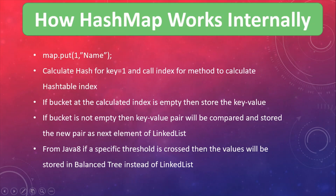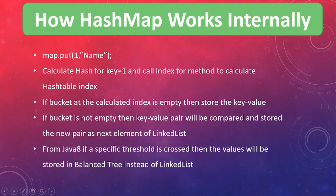If the bucket is not empty, the key-value pair will be compared to the already stored key-value pair. If it is different, then the new element we are trying to put in the map will be stored as the next element in the linked list. Whenever values are stored and the index number is the same for the hash table, all new elements keep appending to the linked list object.